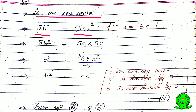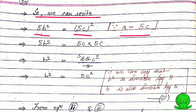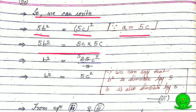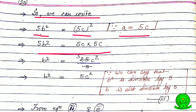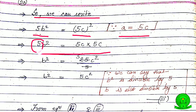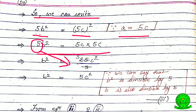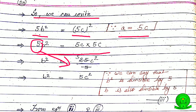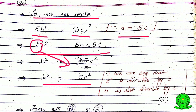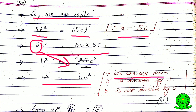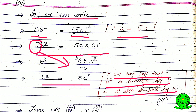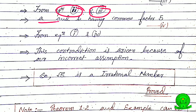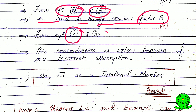Substituting a equals 5c into 5b squared equals a squared, we get 5b squared equals 5c times 5c, which gives 5b squared equals 25c squared. Dividing both sides by 5, we get b squared equals 5c squared. So b squared is divisible by 5, meaning b is also divisible by 5. Therefore a and b have the common factor 5.